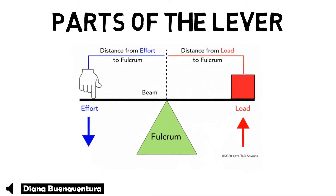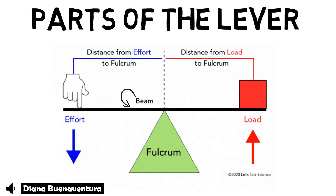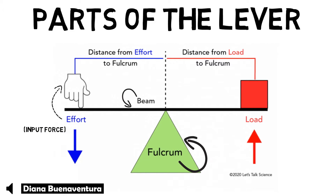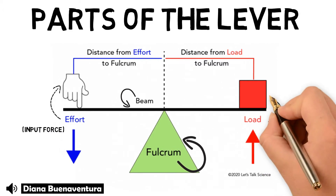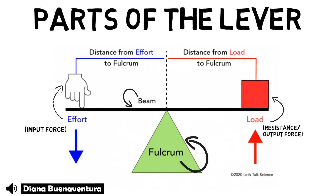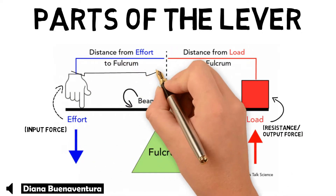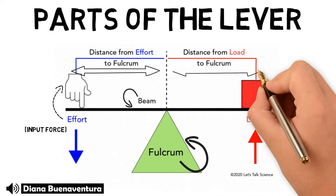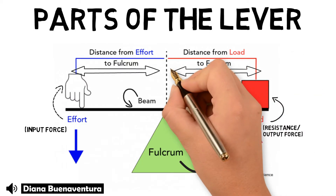For more detailed parts of the lever, here's an illustration. We have the beam and the fulcrum below. On one end, we have the effort or the force of the effort, also called the input side. On the other end, we have the load or the force of resistance, also called the output side. Then we have the distance from the effort to the fulcrum and the distance from the load to the fulcrum.